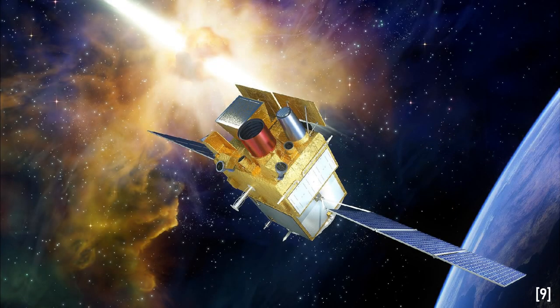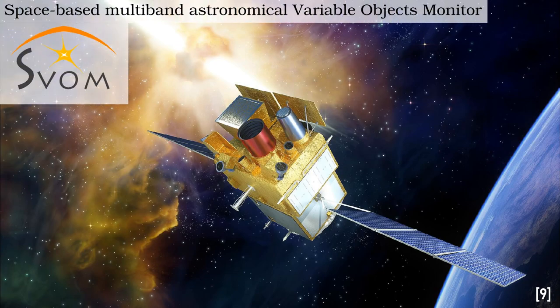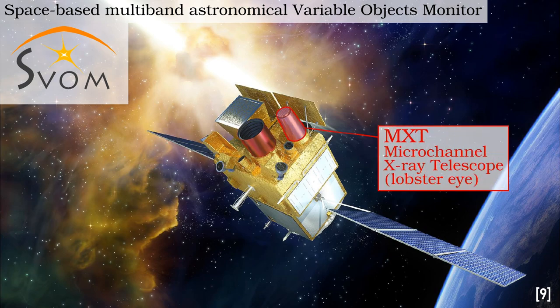The first full science mission to be equipped with a Lobster Eye X-ray Telescope is called SVOM, or the Space-Based Multiband Astronomical Variable Objects Monitor. This is a joint French-Chinese mission, although the Lobster Eye Telescope was assembled at the University of Leicester in the United Kingdom.